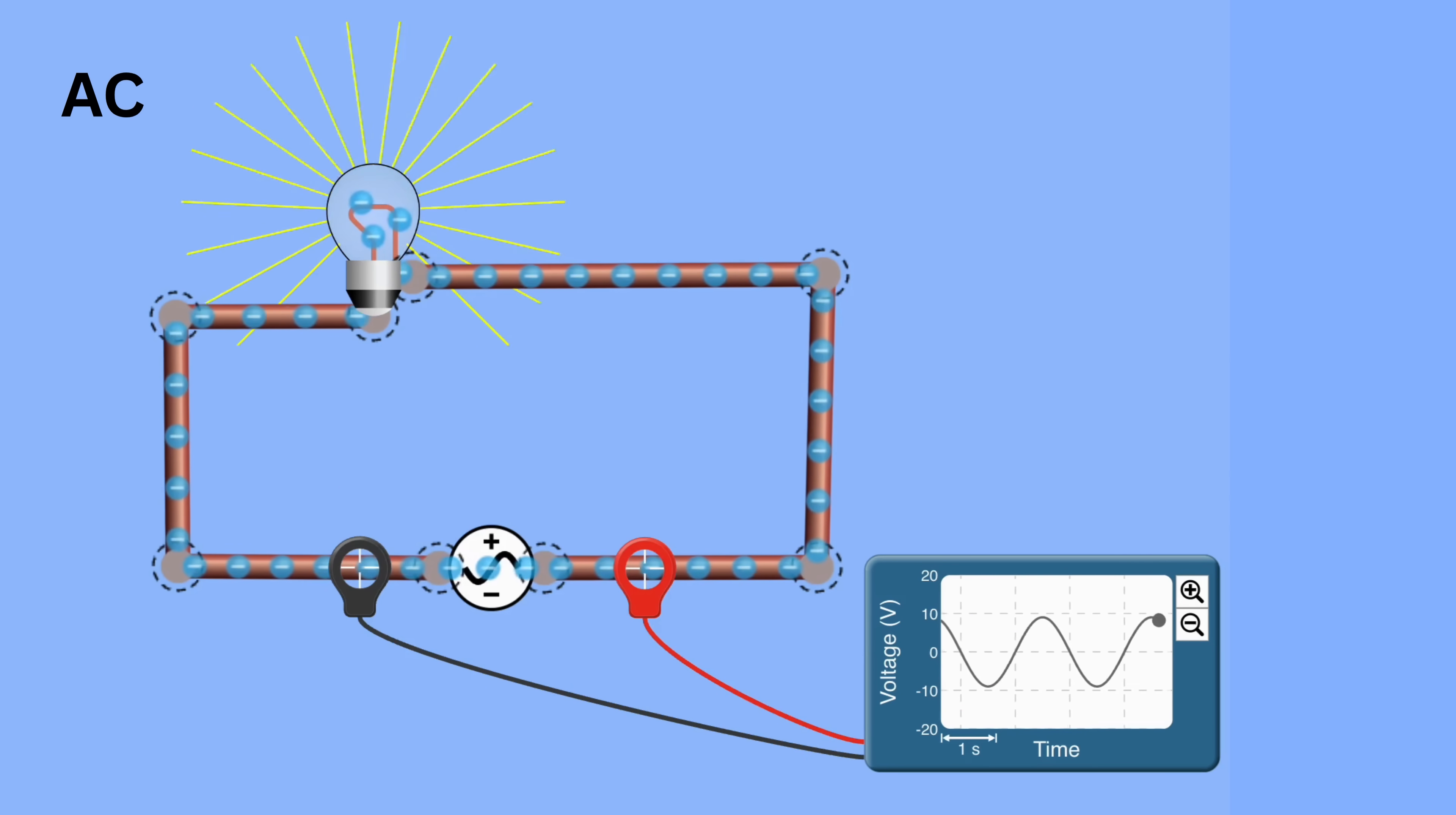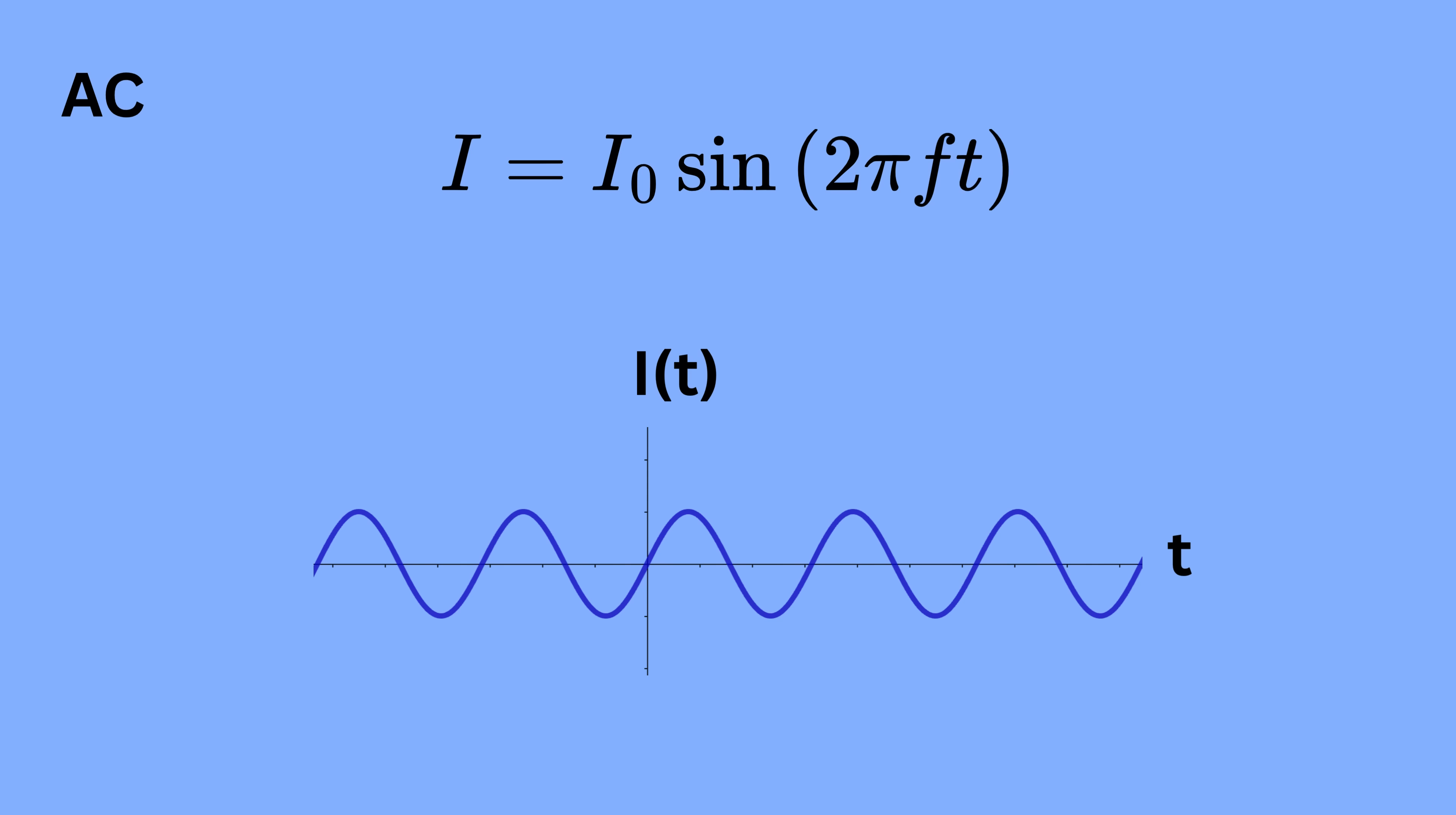Mathematically, we write AC current as I equals I zero times sine of two times pi times F times T. I zero is this peak current, then F is the frequency, and T is time. This periodic change in polarity is what gives AC its name alternating current.